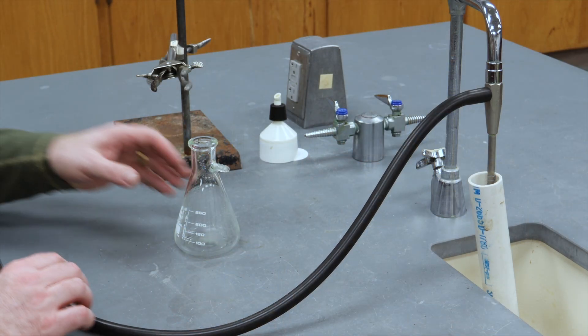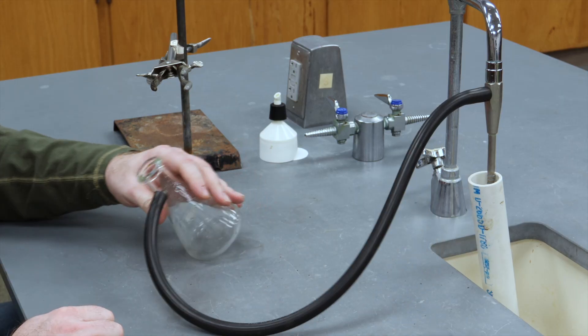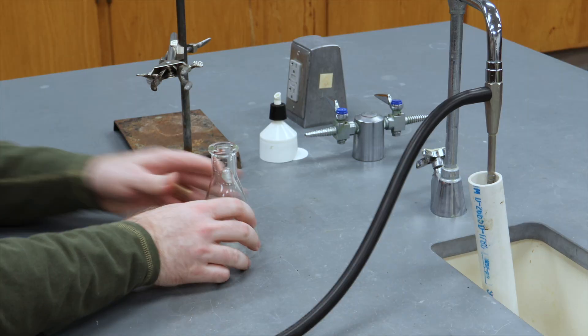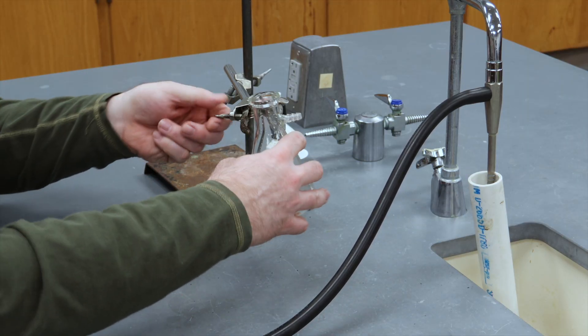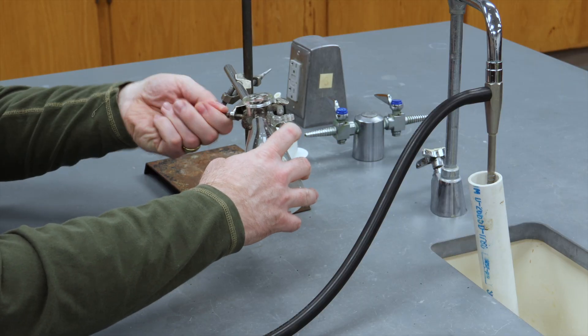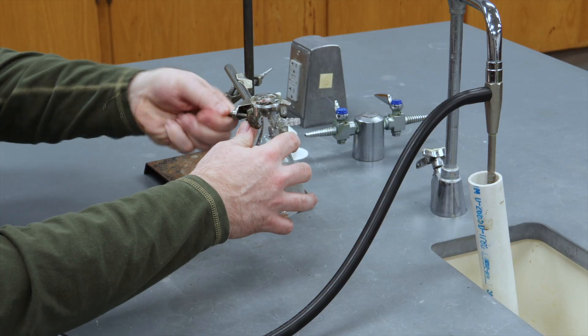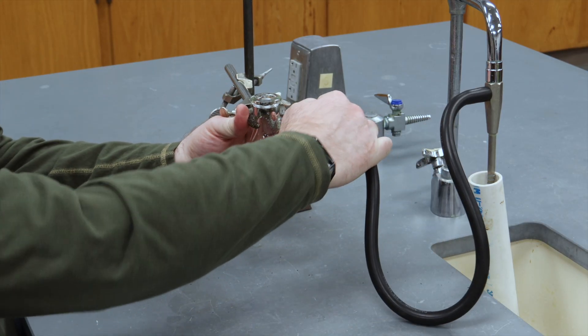Once you attach your rubber hose to the vacuum flask, it is not uncommon for the rubber hose to apply a force to the flask, which might make it fall over. A quick fix for this is to simply attach the vacuum flask to a clamp. I recommend doing this for any vacuum filtration with a relatively small vacuum flask.